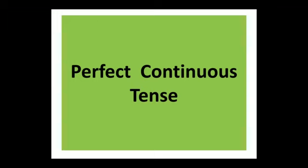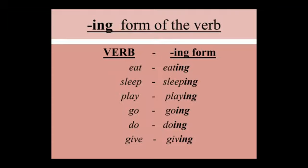Today we are going to study perfect continuous tense. Let us quickly revise the ing form of the verb: eat becomes eating, sleep becomes sleeping, play becomes playing, go becomes going, do becomes doing, give becomes giving. Whenever we talk about continuous tense, we use the ing form of the verb — whether it is simple continuous or perfect continuous.